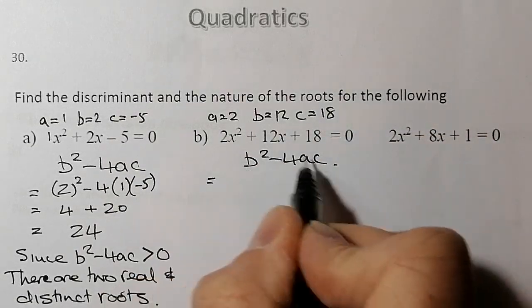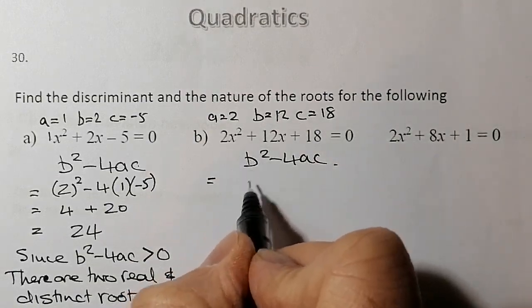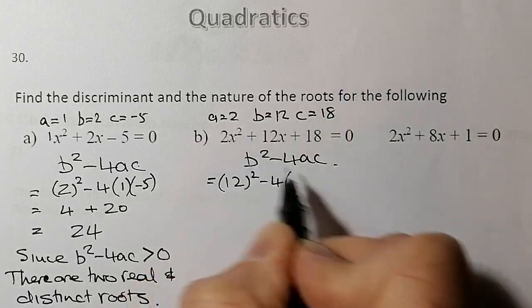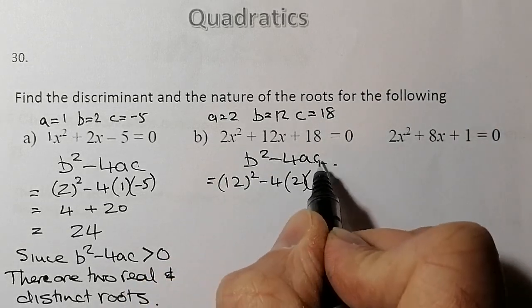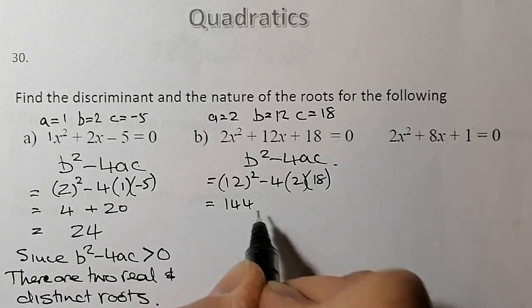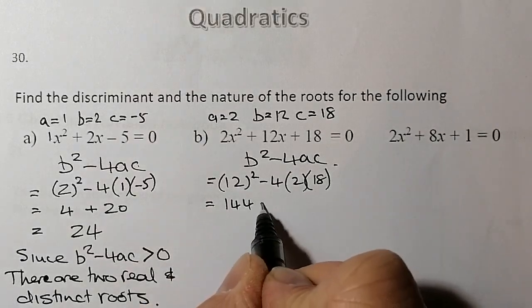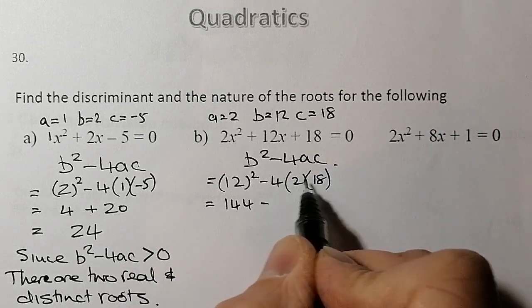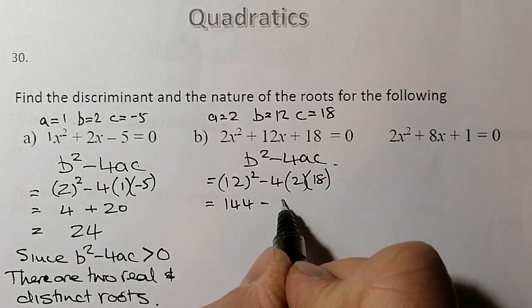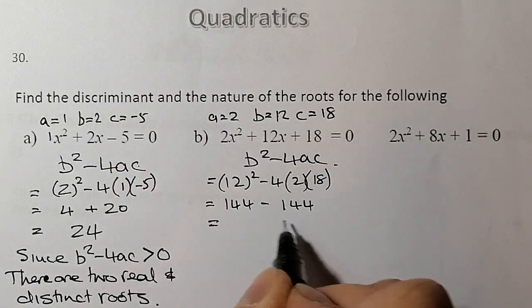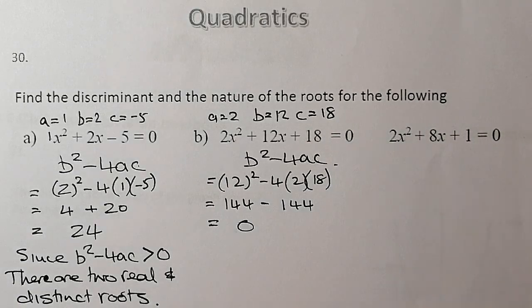So I'm going to substitute that into the discriminant. So what we've got is 12² - 4 × 2, which is a, times the c value, which is 18. To work this out, I've got 12² is 144, and this here is going to be, so 4×2, that's 72, 72 × 2 will be 144 as well. So 144 take 144 away gives me 0.